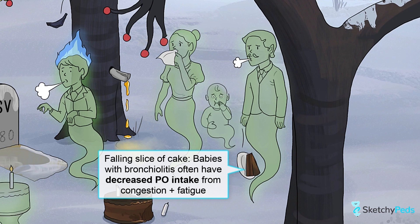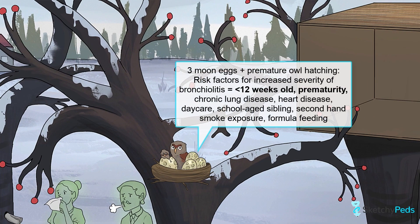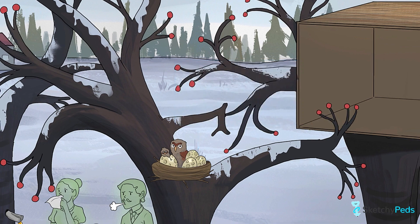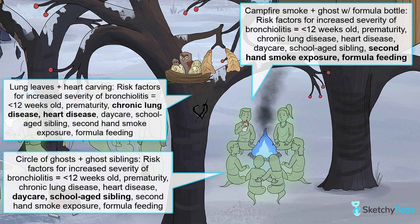When taking your history, be sure to ask about risk factors that can increase the chance of more severe disease. An age under 12 weeks and a history of prematurity can both put an infant at risk for more severe disease, represented by these three moon eggs and this tiny owl that has hatched prematurely. In premature infants, this increased risk is because they have a greater chance of underlying laryngo- or tracheomalacia, a floppy airway, and may have missed maternal transfer of some protective antibodies in utero. Other risk factors include chronic lung disease or bronchopulmonary dysplasia, represented by these wilty lung-shaped leaves, and hemodynamically significant congenital heart disease, depicted by this jagged crossed-out heart carving on the tree.